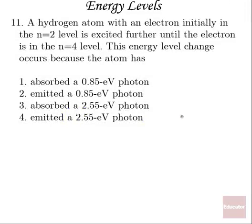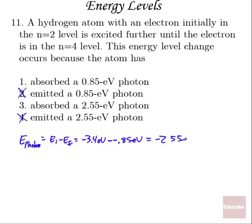All right, last problem here. A hydrogen atom with an electron, initially in the n equals 2 level, is excited until it is in the n equals 4 level. This energy level change occurs because the atom, well, to go from a lower to higher energy level, first off, it must absorb a photon so we can get rid of any of the emitted answers. And to find the energy of that photon, the energy of our photon is going to be its initial level minus the final level, or negative 3.4 eV from the n equals 2 level to negative 0.85 eV from the n equals 4 level, or negative 2.55 eV, where that negative just means that it's absorbing that photon. Correct answer must be number 3.